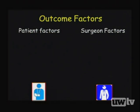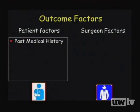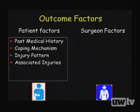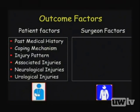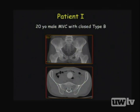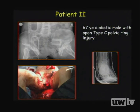Outcomes are influenced by patient factors — including medical history, coping ability, injury pattern, associated injuries, and neurological or urological injuries — and surgeon factors, including pelvic alignment and avoidance of treatment complications. For example, a 20-year-old male with a closed B-type fracture from an MVA has very different outcome predictors than a 67-year-old insulin-dependent diabetic with an open type C pelvic ring injury requiring bilateral internal iliac embolization.